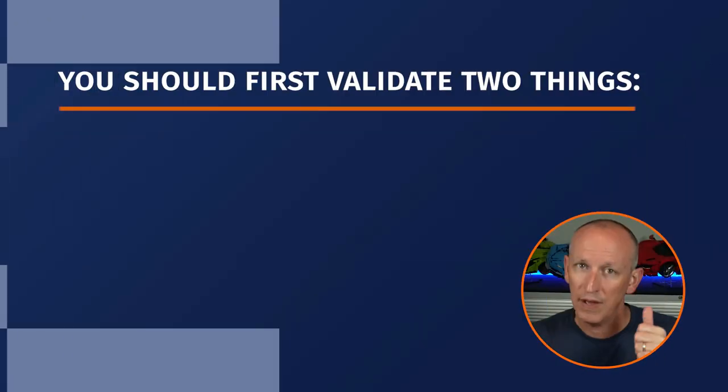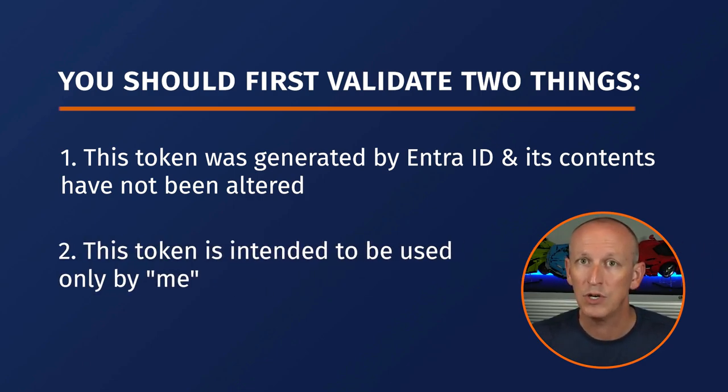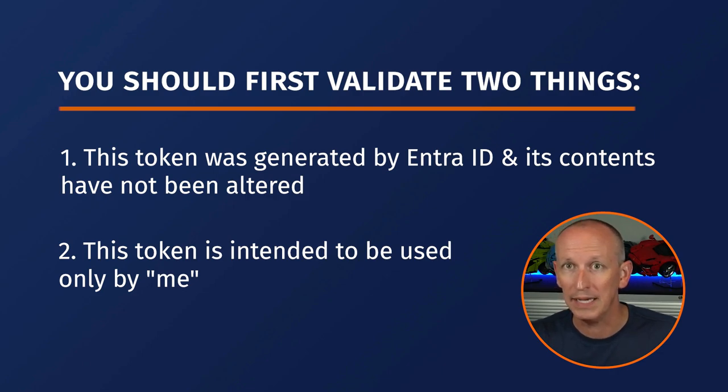If you've elected to use Entra ID to secure your REST API, you have an established trust with Entra ID. And therefore, when you receive an OAuth access token from the caller, you should validate two things: that the token was generated by Entra ID and its contents have not been altered since it was created, and that the token is intended to be used only by your API. In this video, I'm going to show you how to do both of these things.